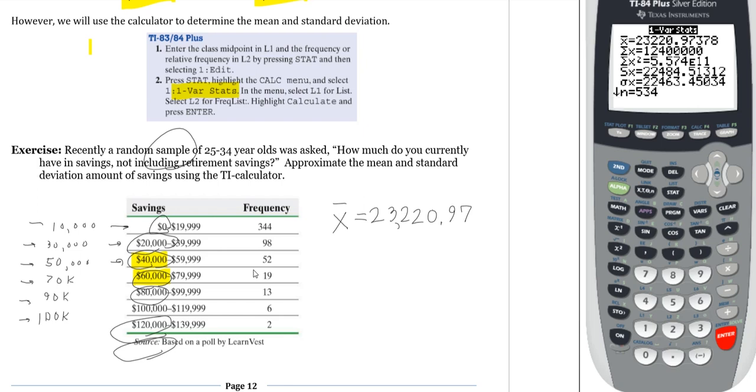And then for my standard deviation, because this is a sample, keep in mind it's a sample, so we are going to use S. So we use 22,484.51. So that would be my mean and my standard deviation. If it was a population, we would use sigma.